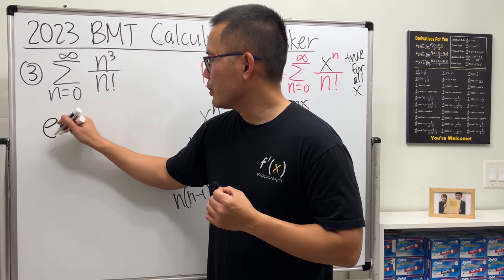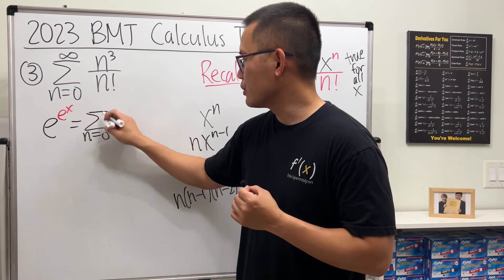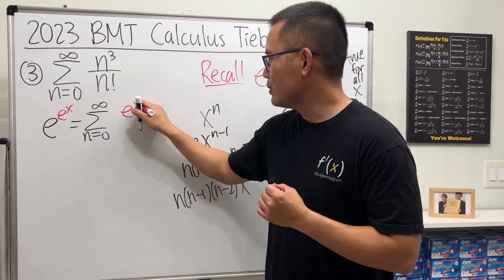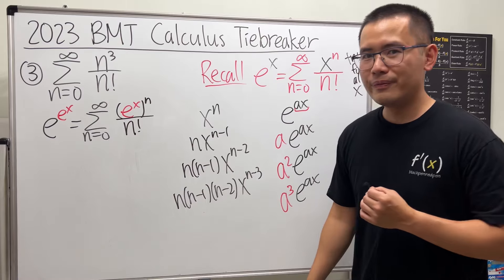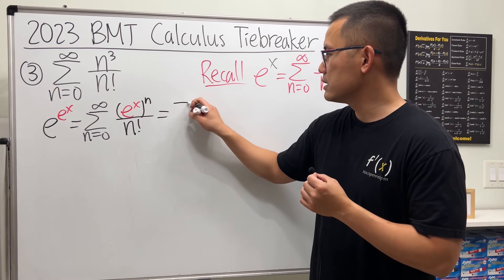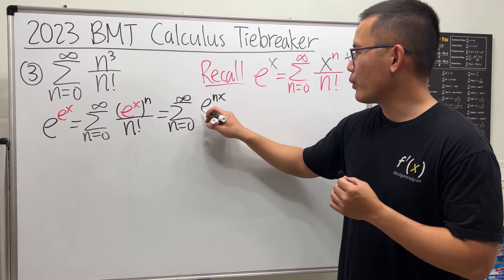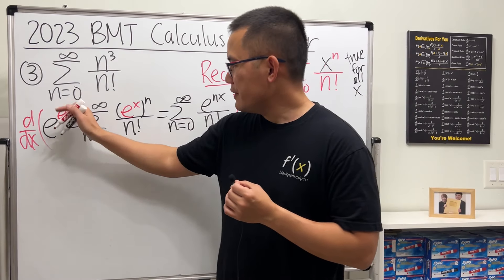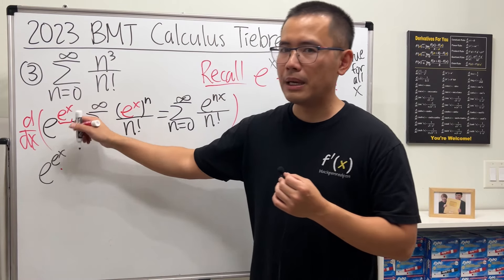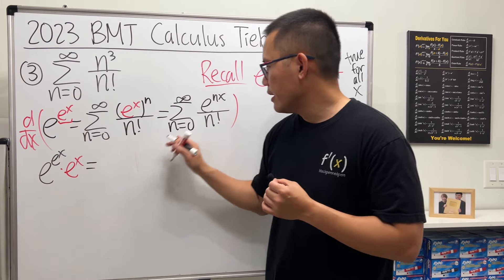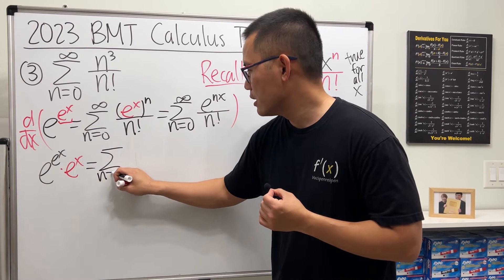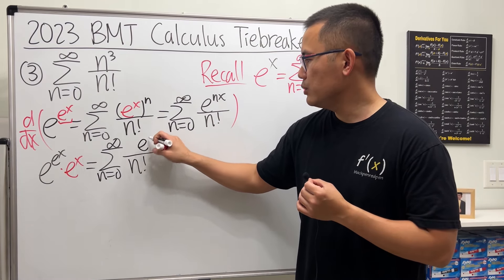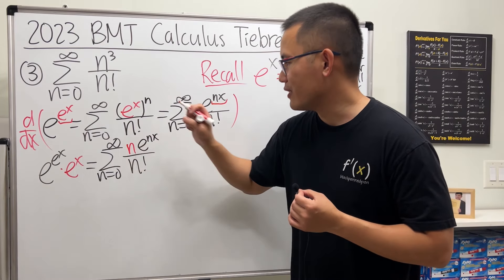So: e to the e to the x equals the sum as n goes from 0 to infinity of (e to the x) to the nth power over n factorial. It works because the series is true for all inputs. Multiplying the powers, we get e to the nx over n factorial. Now let's take the derivative of both sides. On the left-hand side, we have e to the e to the x, and by the chain rule we multiply by the derivative of the input, which is e to the x. On the right-hand side, taking the derivative, the n factorial stays the same, and the derivative of e to the nx gives e to the nx times n.